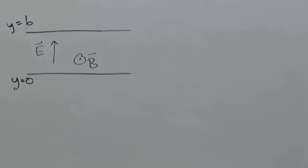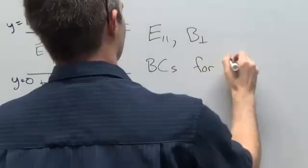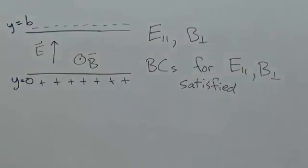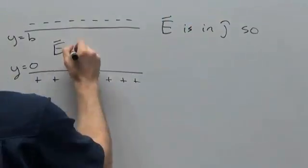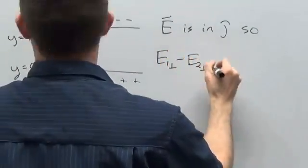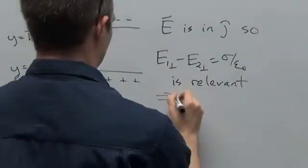That means E parallel and B perpendicular are zero everywhere, and so the boundary conditions involving those are satisfied for free. Since E is perpendicular to the interface, the E1_perp minus E2_perp equals sigma over epsilon naught condition is non-trivial.